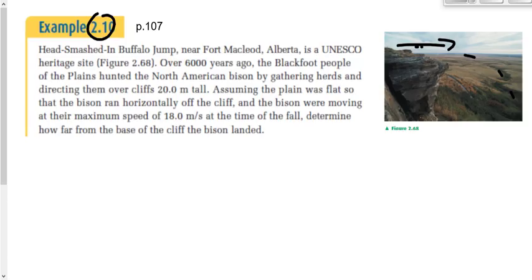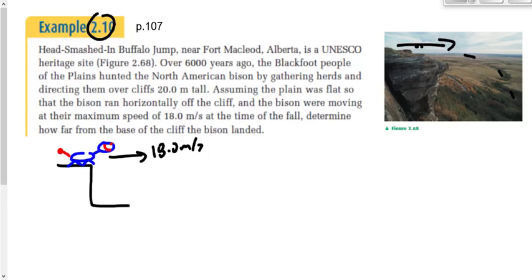This is a projectile motion question. Whenever we come across a problem like this, first draw a diagram. Here's my cliff, here's my bison running at 18.0 meters per second horizontally. The height of the cliff is 20.0 meters. Then we draw the shape of the bison's path — it goes out and curves down following that parabolic path until it hits the ground. Our question is: how far from the base of the cliff did he land?